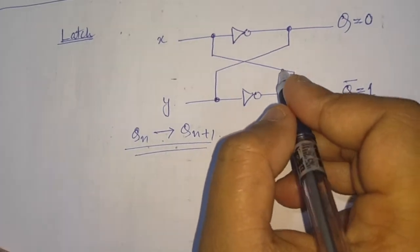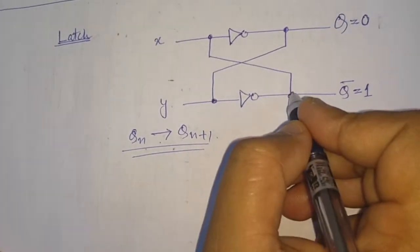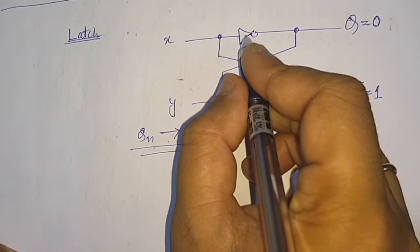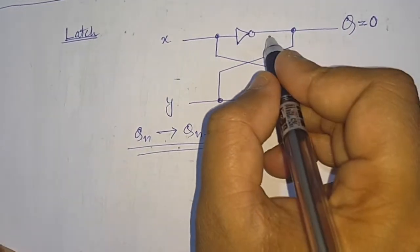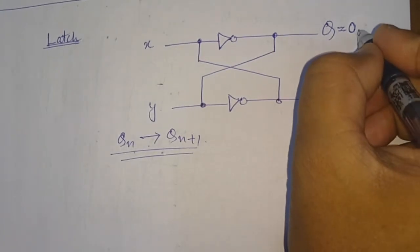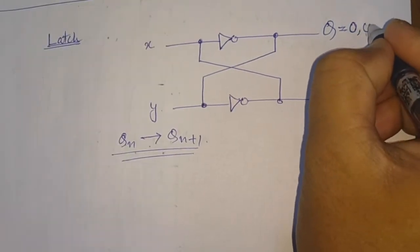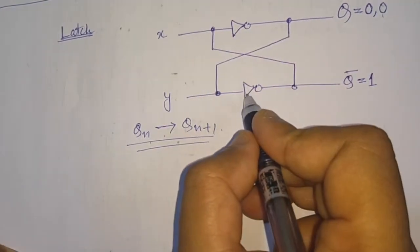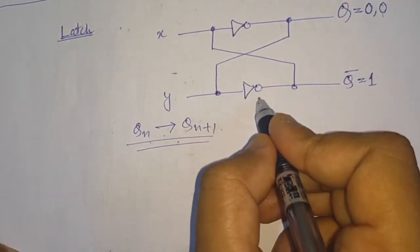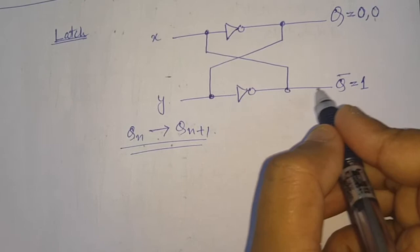And during the next period, this one will be redirected to the input of this upper NOT gate. So we will have here again zero. That means we got again zero. Again this zero will be redirected to this NOT gate input lower inverter and we will get here again one.